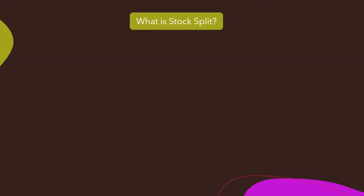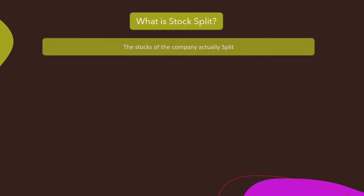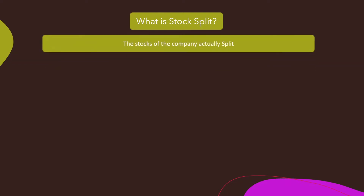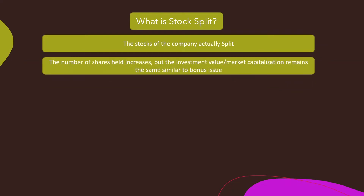The stocks that you actually hold are split. When a stock split is declared by the company, the number of shares held increases, but the investment value — or in other words the market capitalization — remains the same, similar to the bonus issue.